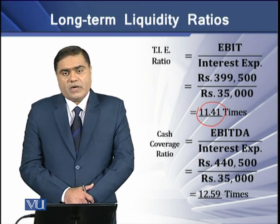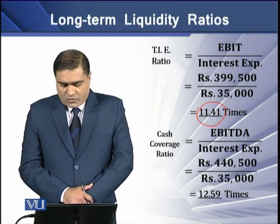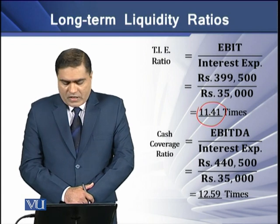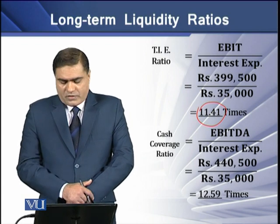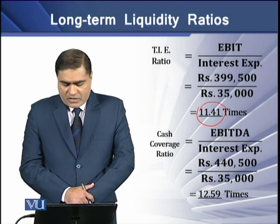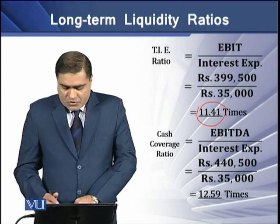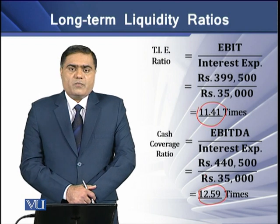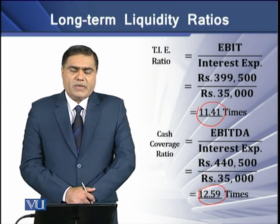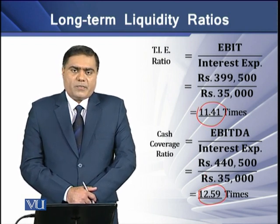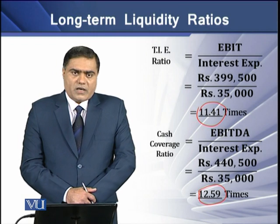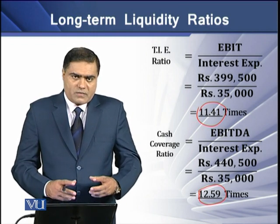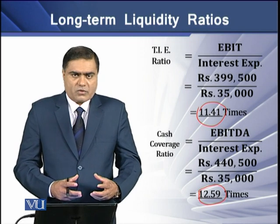If we have EBITDA of Rs. 440,500 and interest expense of Rs. 35,000, and we divide EBITDA by interest expense, we get a ratio of 12.59 times.